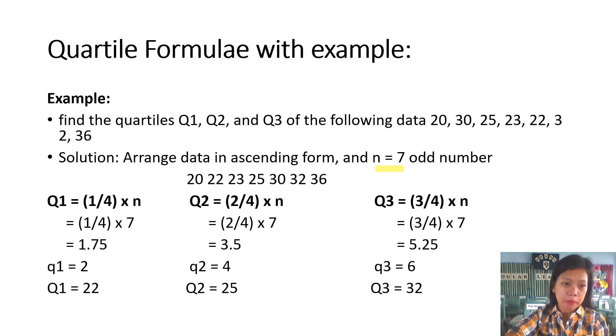Our formula for quartile 1 is Q1 equals one-fourth times N or the total number of data. Quartile 2 formula is two-over-fourth times N, and quartile 3 is three-fourth times N or the total number of data. First is the quartile 1. One-fourth times seven. Seven is the total number of data. One-fourth times seven is equals to 1.75 or the answer is two.